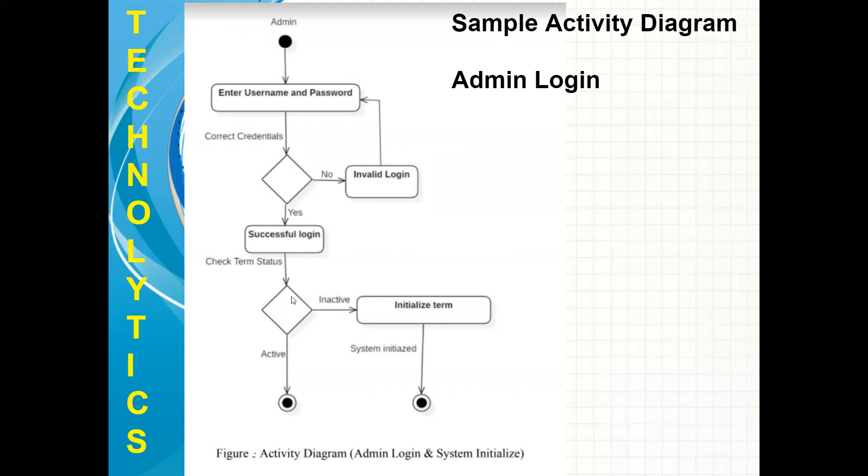This action will happen after successful login. Again, it is moving into the decision phase. It is checking for the term status, whether term is created or not. If it is active, fine, it will stop the process. If it is inactive, that means term is not yet created. It will initialize the term. And at the end, both these things will end into the final stop process position. You all can see we have used the symbol filled circle nested within the circle.